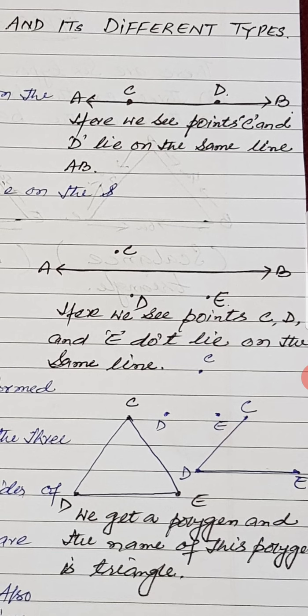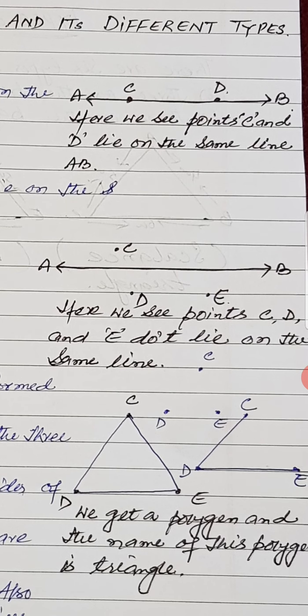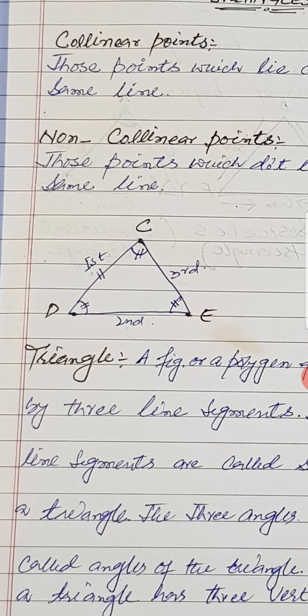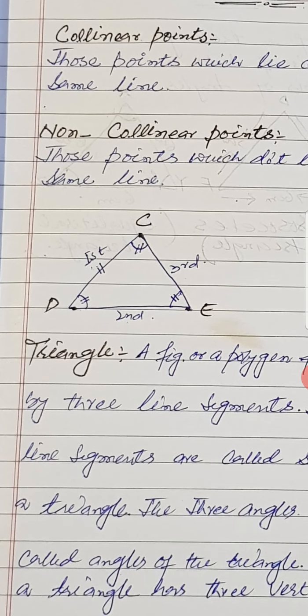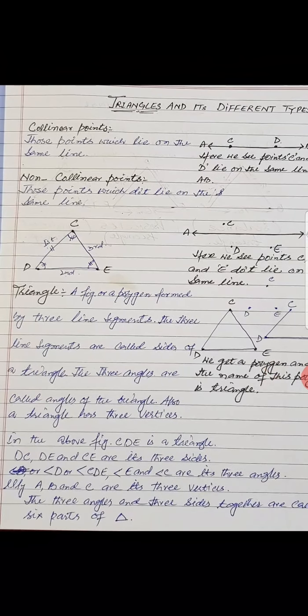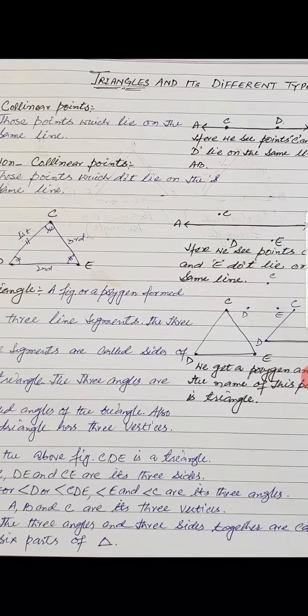When a point is not on the same line as the others, those points are called non-collinear points. We see point C, D and E do not lie on the same line. So these three points are said to be non-collinear points. Non-collinear points are those points which do not lie on the same line.